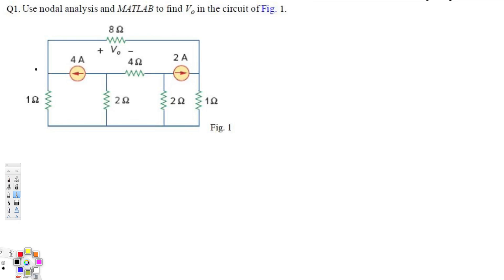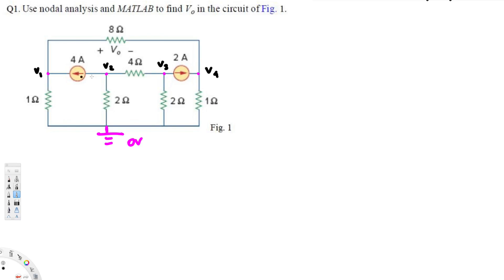In the node analysis method, we first set the ground by connecting the bottom to ground, so that is zero voltage. For the unknown nodes — a node is when we have more than one branch at a junction — here we have node one, two, three, and four. For each node we assign voltages: V1, V2, V3, and V4. So now we have four unknown voltages.